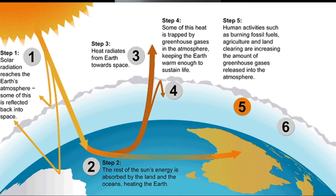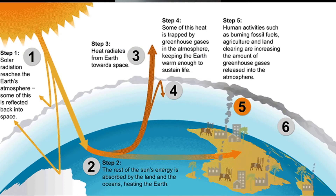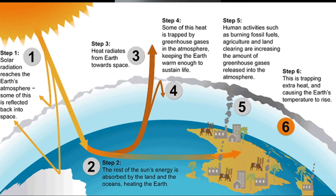Step 5: Human activities such as burning fossil fuels, agriculture, and land clearing are increasing the amount of greenhouse gases released into the atmosphere. Step 6: This is trapping extra heat, causing the Earth's temperature to rise.